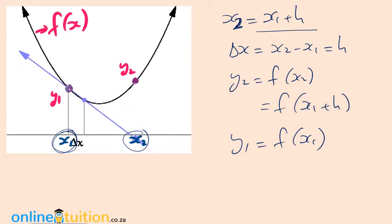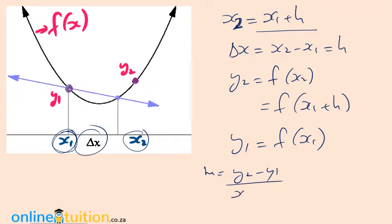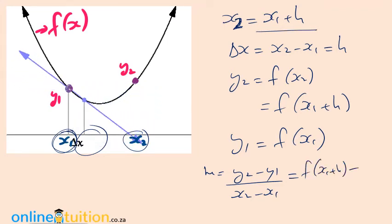To get the gradient, as delta x gets smaller and smaller, we say x2 approaches x1 in that limit where h tends to zero. If we write down the gradient between y2 and y1, we'd write m equals y2 minus y1 all over x2 minus x1. But what is y2? It's f(x1 + h) minus f(x1) all over x2 minus x1. What is x2 minus x1? It's h.